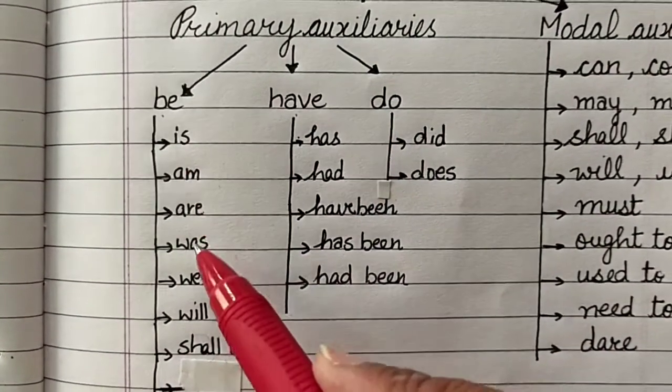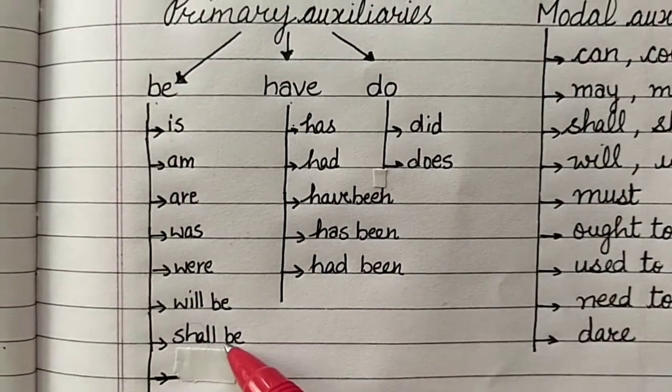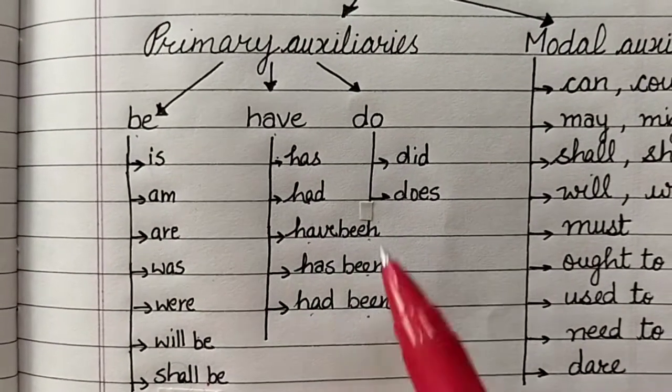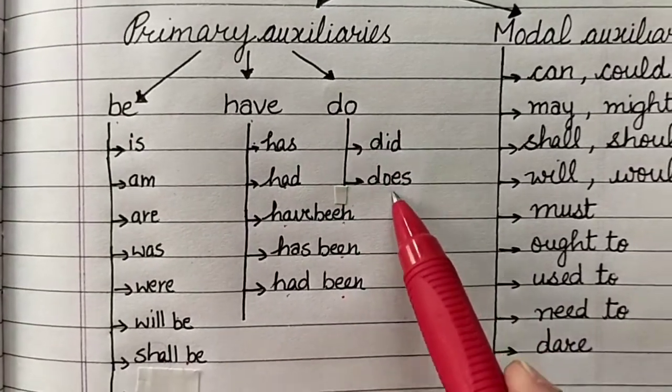Now, is, am, are, was, were, will be, shall be. Has, have, had and have been, has been, had been. Do, did and does.